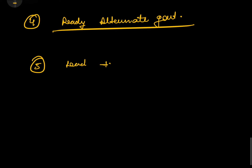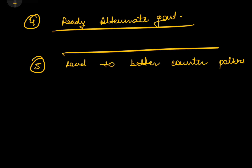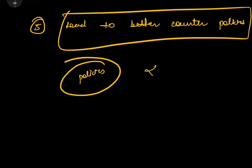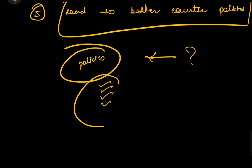Point number 5: it leads to better counter policies. The shadow cabinet does not just question the government's work — they also provide suggestions on what should be done. If the government has taken a policy, the shadow cabinet will question it and provide their insight on how to improve the policies and execution. They work for the welfare of the state and the people, so through cross-examination and questioning, it leads to better counter policies overall.